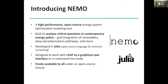We built NEMO with a focus on analyzing critical and emergent questions in contemporary policy — things like modeling grid integration of variable renewable energy, deep decarbonization pathways, and analyses of robust energy futures under climate change. We built this tool in an open source language called Julia, a cutting-edge language intended for high performance mathematical computing, and we're making it freely available under an open source license.